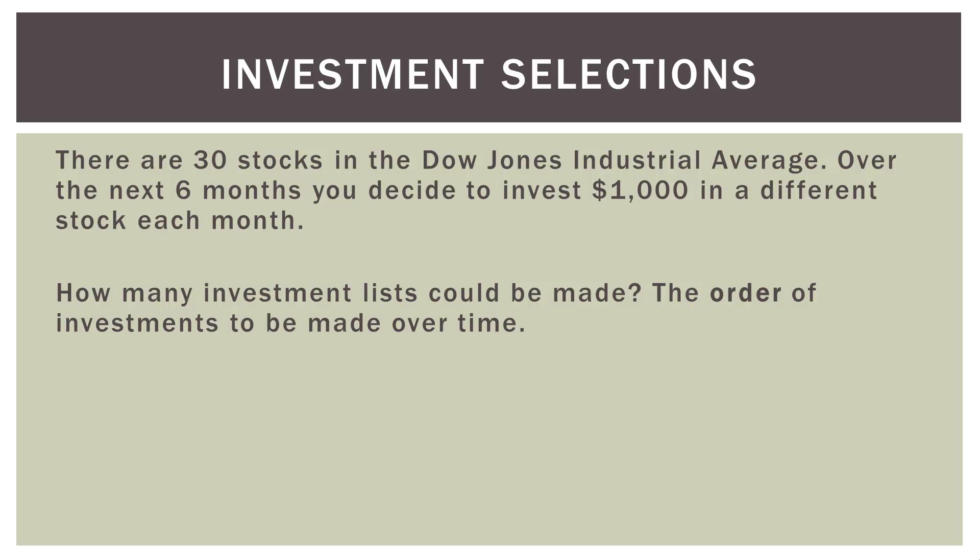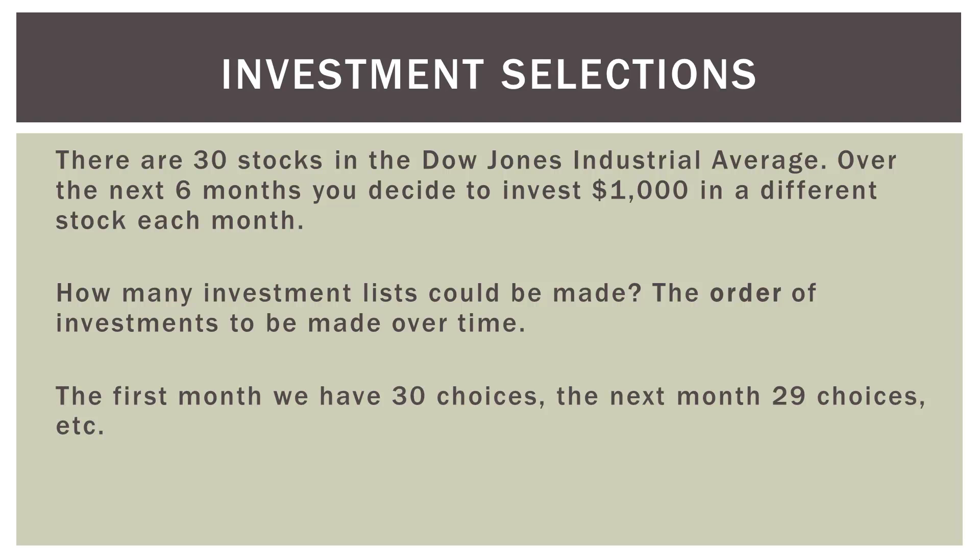So this is a permutation of 30 and 6. That comes out to 427,518,000 different permutations — if we're selecting 6 stocks from the 30 in unique orders, that's over 420 million different unique lists of six stocks. It's quite tremendous.